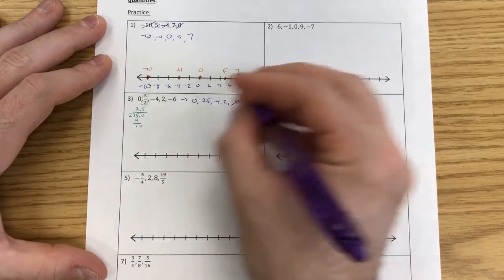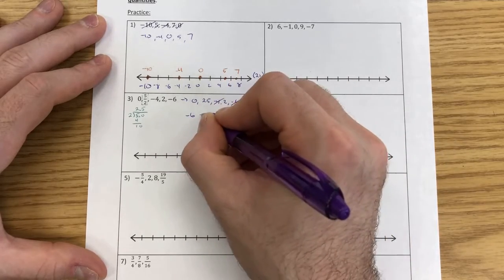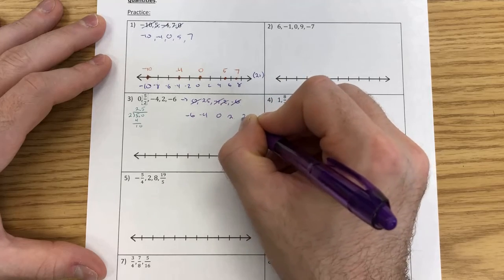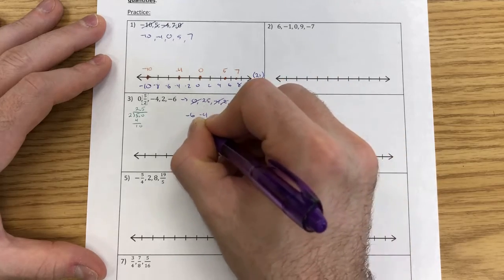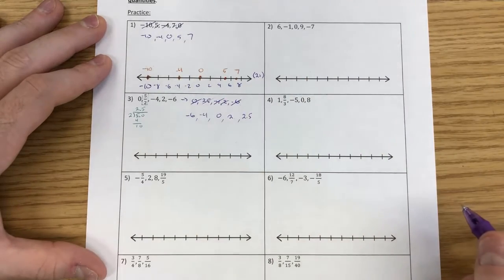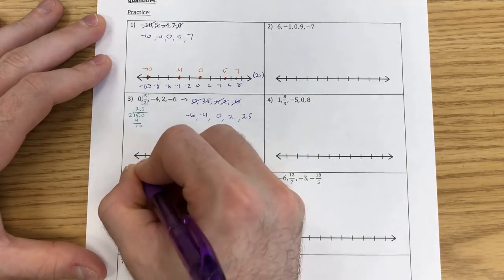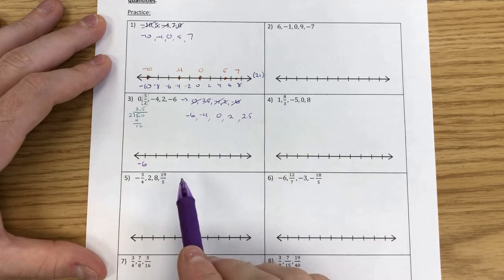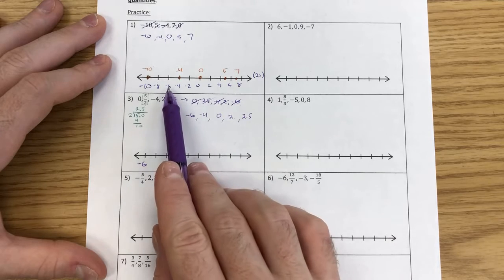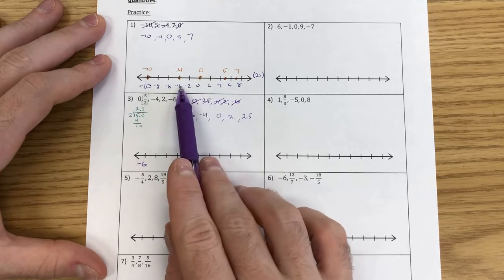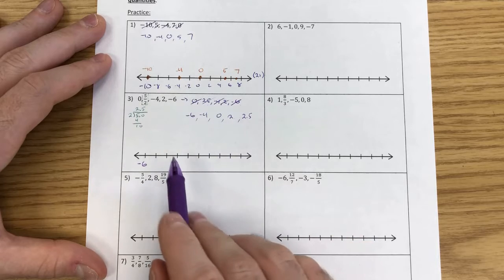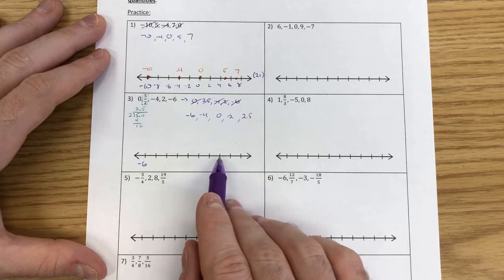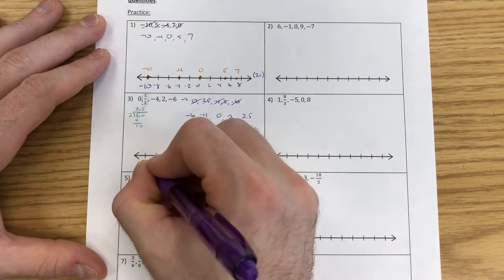I no longer need to worry about where the fraction is because I can see where it exists as a decimal. I'm going to list them in order from least to greatest: negative 6, negative 4, 0, 2, 2.5. My number line needs to encompass from negative 6 all the way through 2.5. I noticed I can count by 1s: negative 5, 4, 3, 2, 1, 0, 1, 2, 3. So this works — I can do this by 1s.